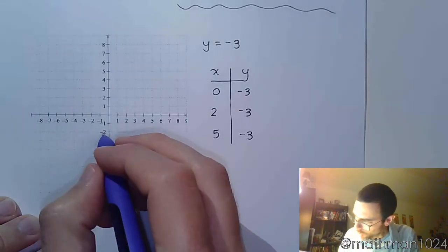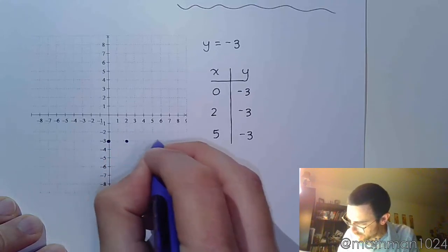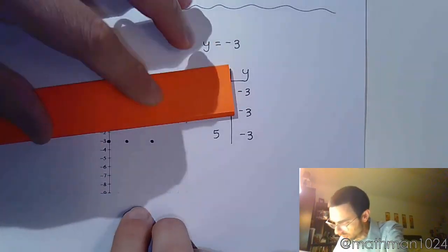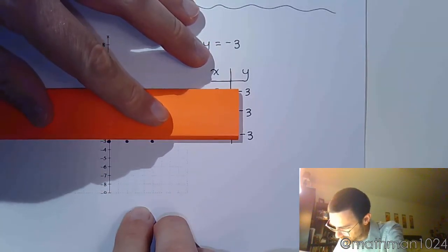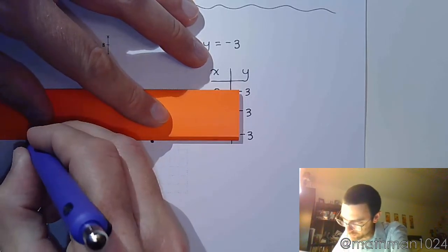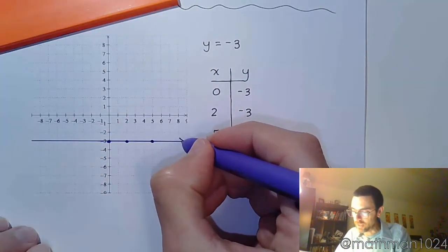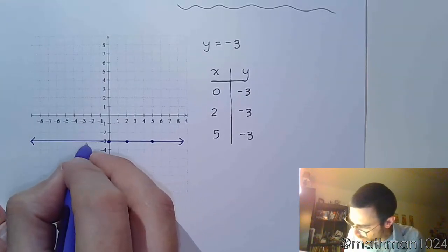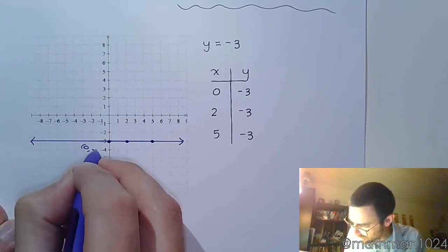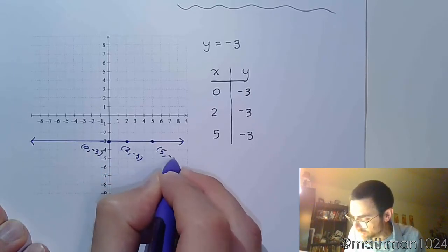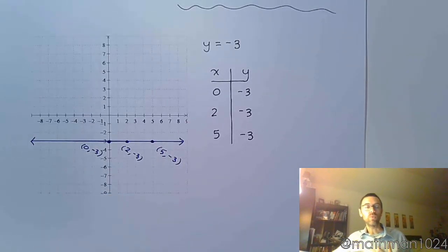And so when you plot this, we have 0 comma negative 3, 2 comma negative 3, and 5 comma negative 3. So we just have this horizontal line. I know a lot of students want to say it's a straight line—yes, because all lines are straight. But we have this horizontal line. And you'll notice that for each of these ordered pairs, 0 comma negative 3, 2 comma negative 3, and 5 comma negative 3, the key thing here is that every single y-coordinate is negative 3. That's what this equation is saying.